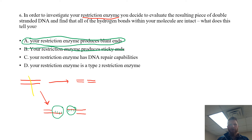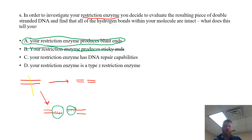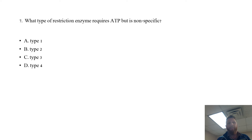The other answer options: your restriction enzyme has DNA repair capabilities — just in terms of probabilities and best answer options, that's one you could discriminate on. Your restriction enzyme is a type 2 restriction enzyme — type 1, type 2, and type 3 restriction enzymes pertain to a recognition sequence and the requirement or utilization of ATP in that reaction. So the correct answer is A: blunt ends.